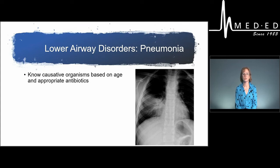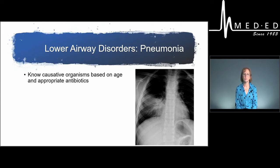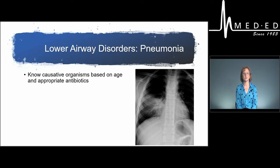Next, let's talk about lower airway disorders, starting with pneumonia. This chest X-ray shows a right middle lobe consolidation — the right part of the lung is very opacified or white, suggestive of pneumonia. There are different organisms based on age. Young infants under three months can get pneumonia from chlamydia via vertical transmission. Older children, especially late school age or adolescents, tend to have mycoplasma pneumonia, also called walking pneumonia. Strep pneumo is another common causative organism. Antibiotic therapy will be titrated based on the most likely causative organism.